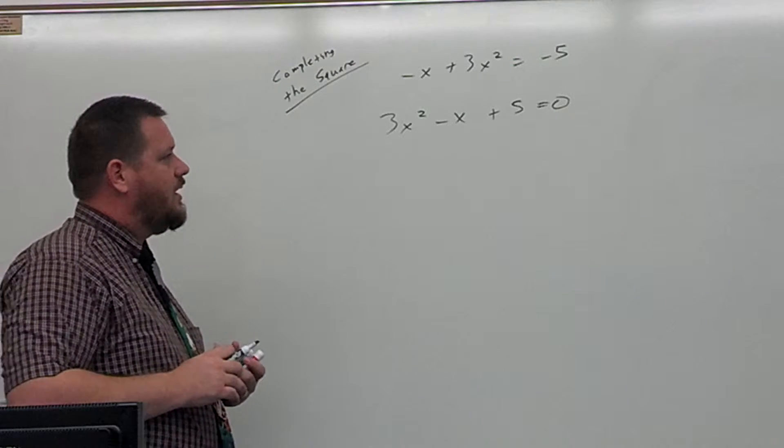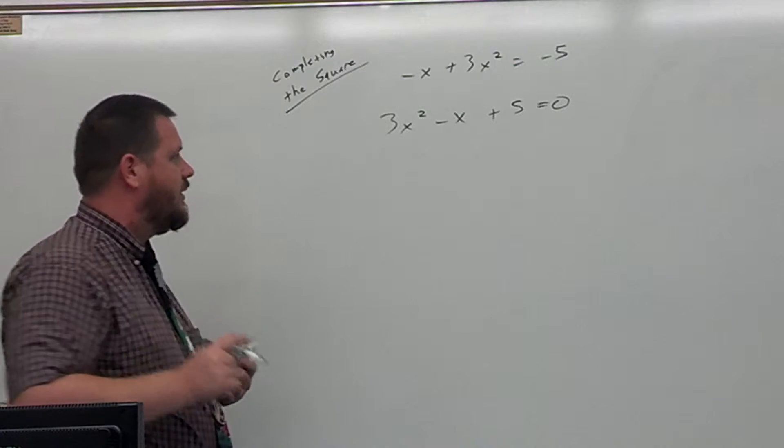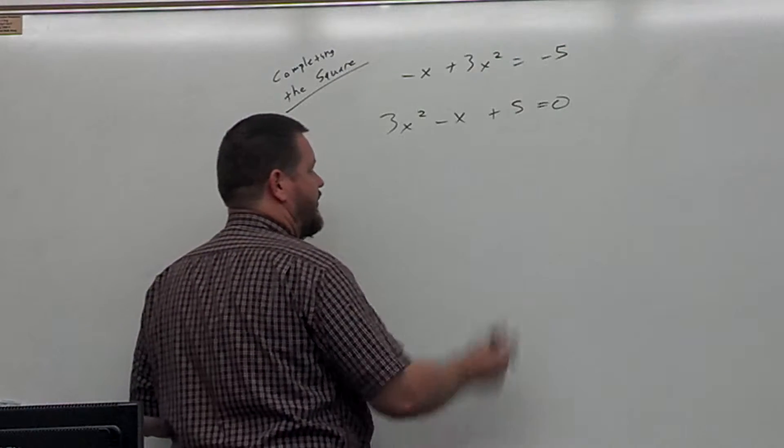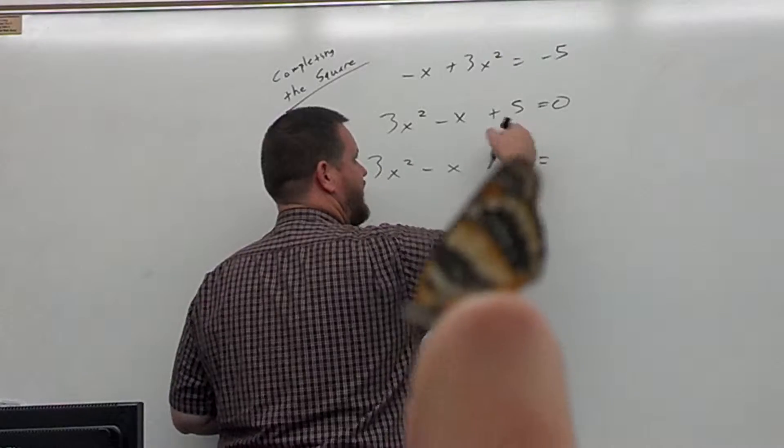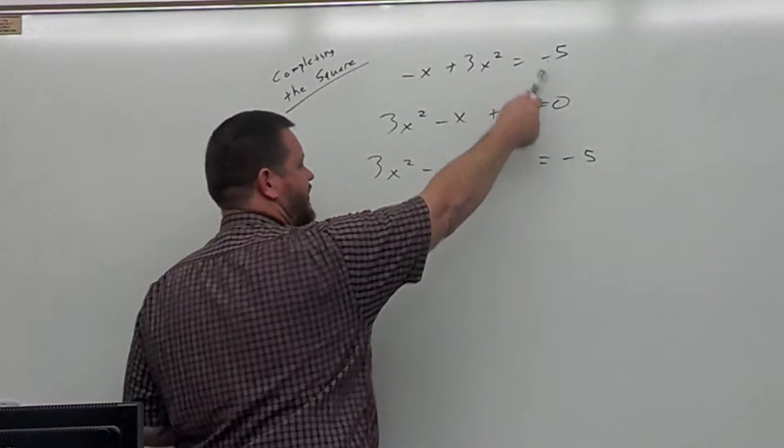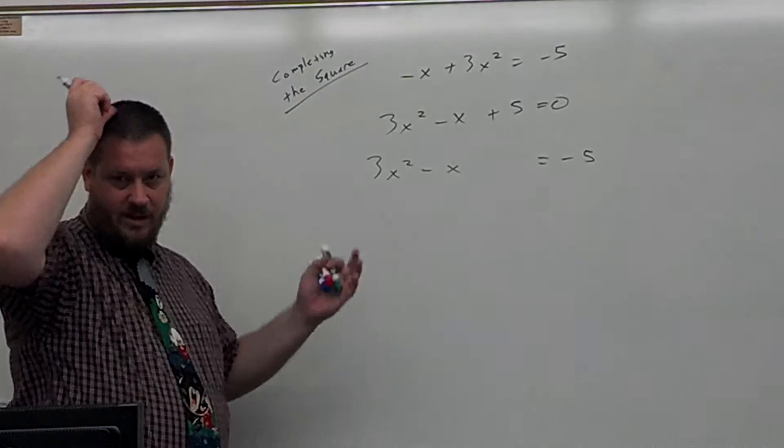Then, the next step here is put the number on the other side of the equation. Let's leave a space and put the 5 over here. Now in this particular case, I could have just left it over there, just to make the point.